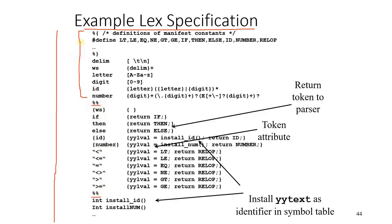So this is the regular definition part. This is the pattern part, meaning the translation rules part. And this is the auxiliary procedures or methods, user-defined procedures or methods part. So these are the three parts the lex specification consists of.